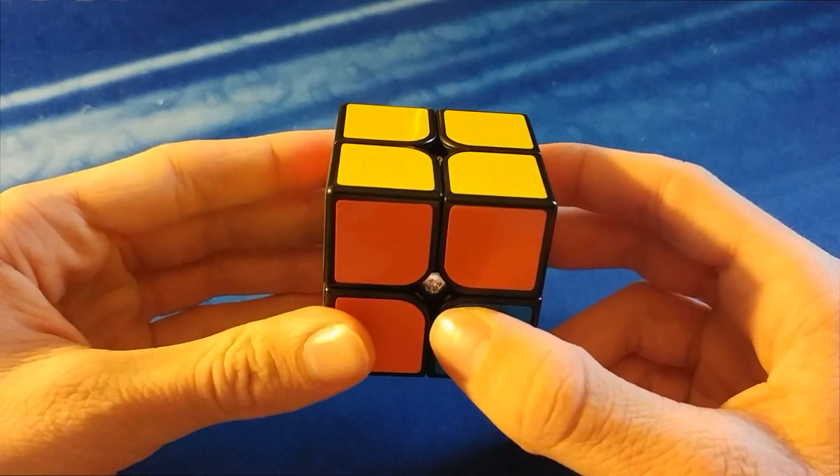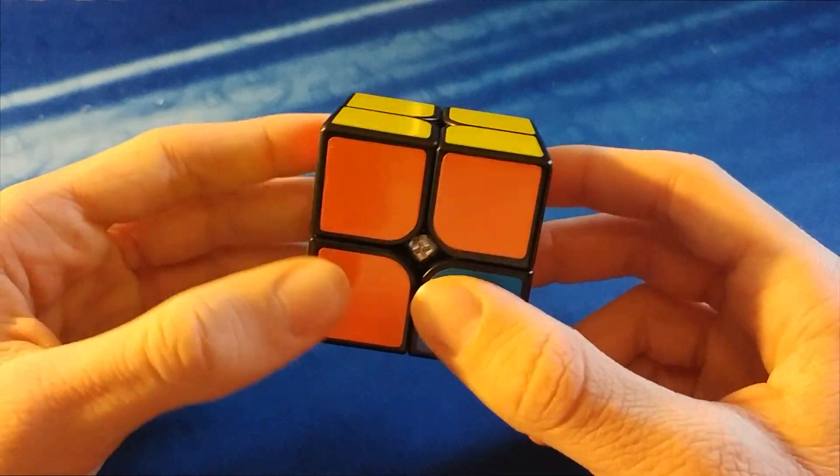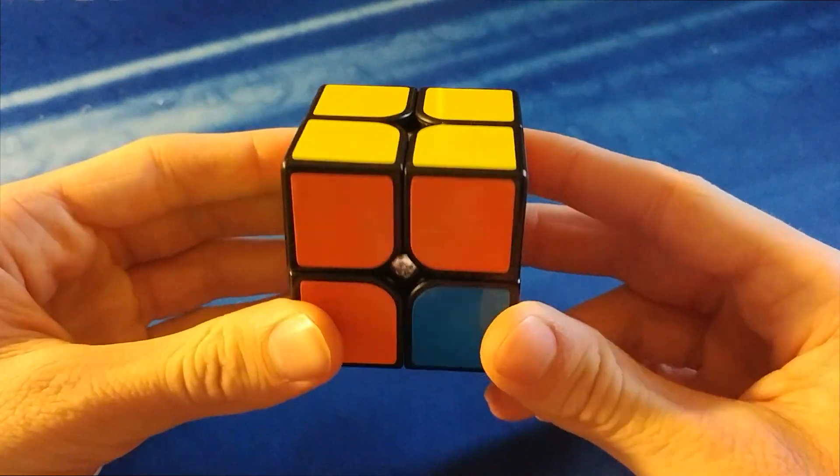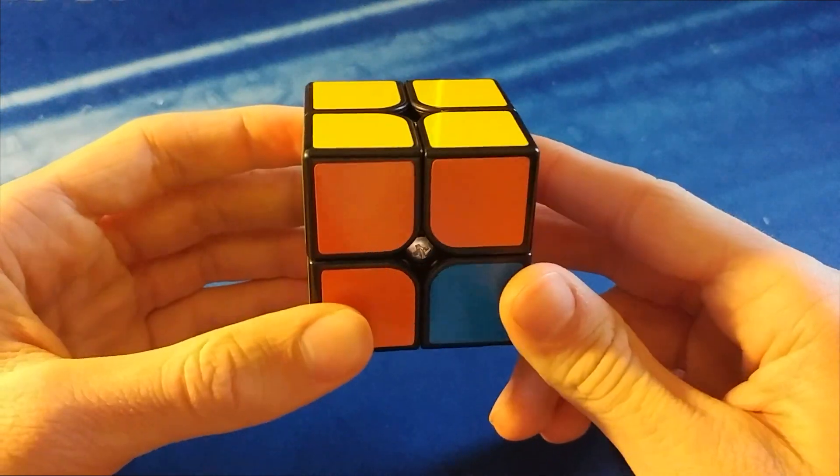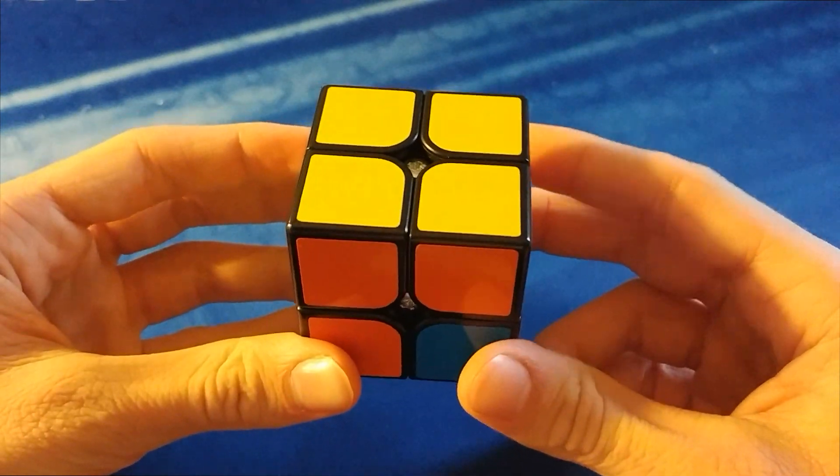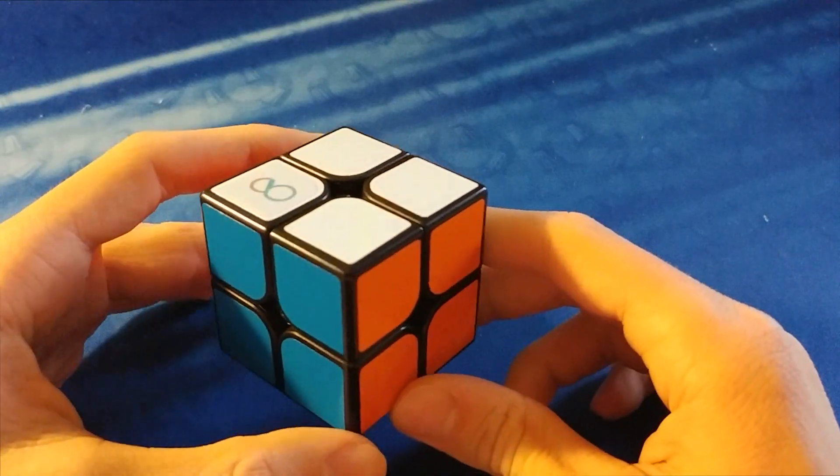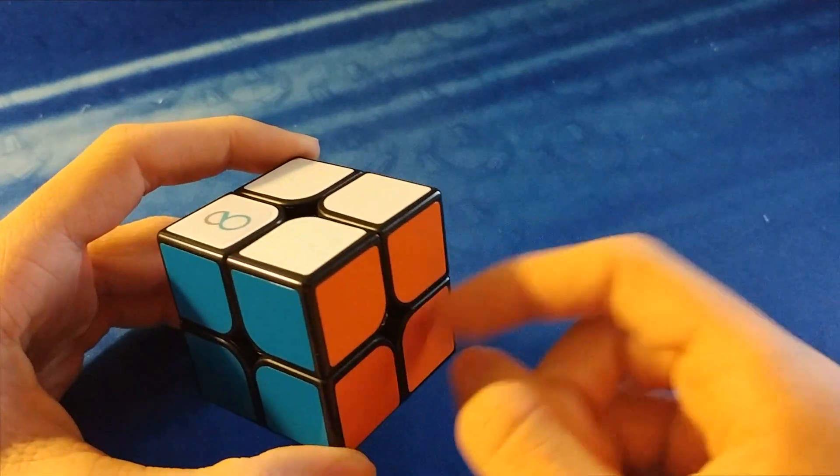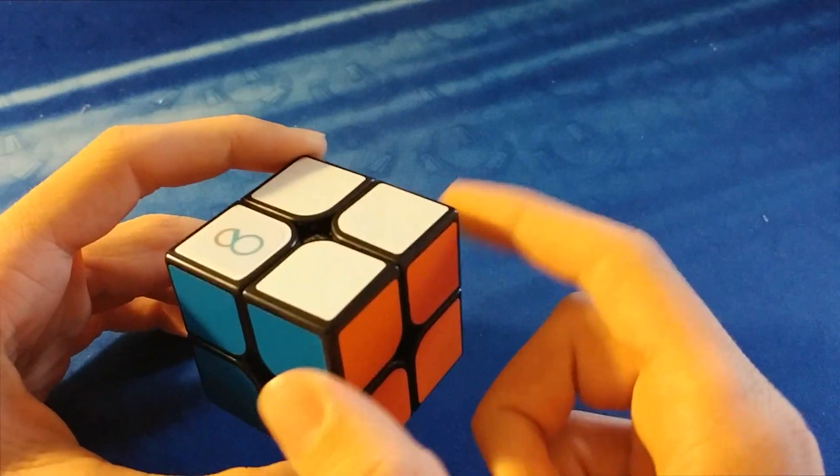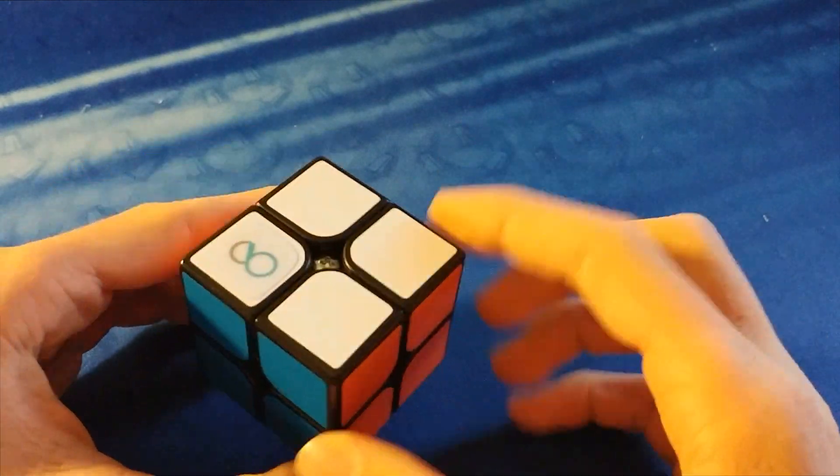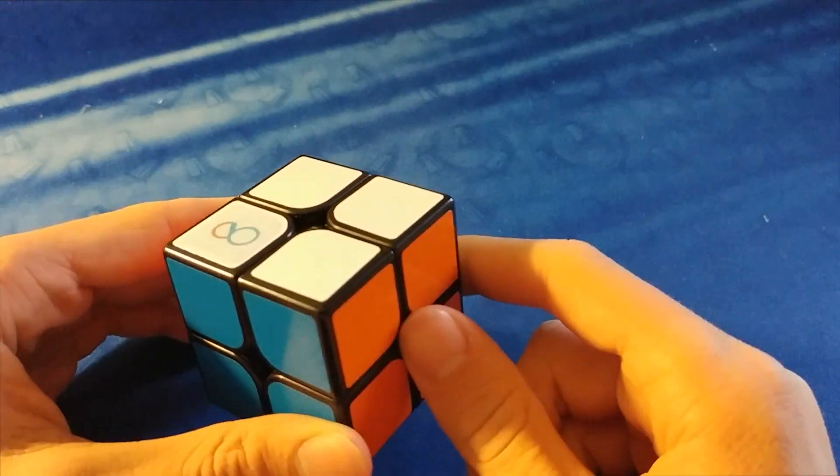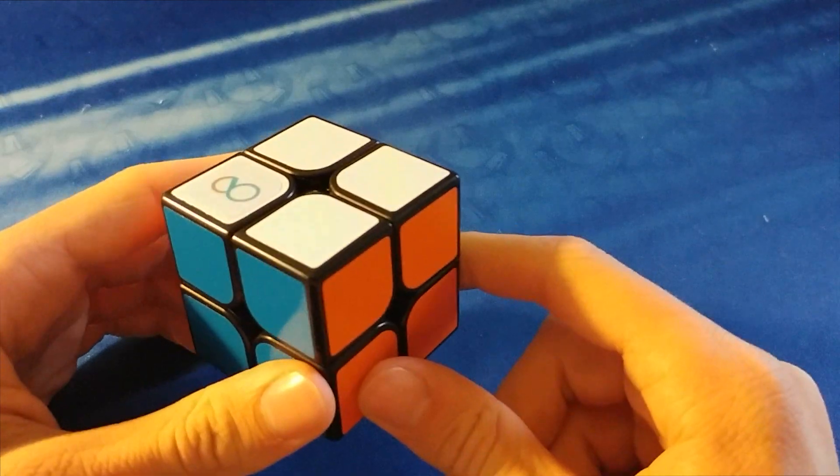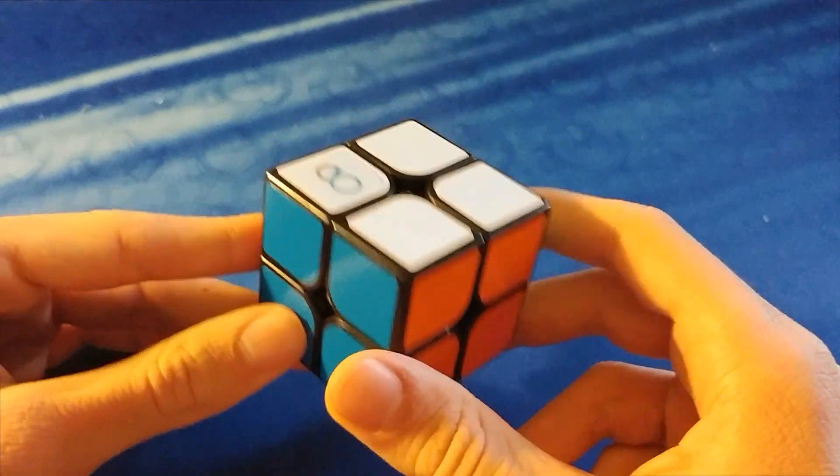There aren't too many algorithms for this, and you probably don't know these, so you're going to want to watch the next part and see how to do each of these algorithms. Okay, so whenever we're on PBL, for each layer you'll either need to swap two pieces adjacent, or two pieces diagonally, or you'll have a solved layer, so that's what you're going to want to look for when you're looking for recognition.